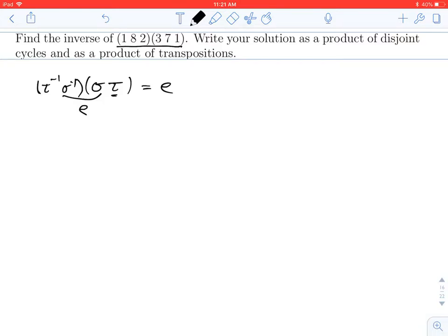So you could think about this in the following way. Imagine that tau, that's putting on your socks, and sigma is putting on your shoes. Well, when you want to undo that process, you first have to take off your shoes, and then you can take off your socks.